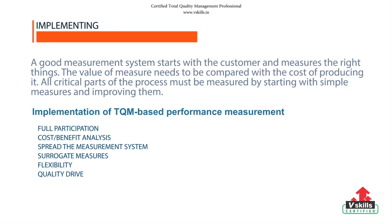Fourth step is to use surrogate measures for subjective areas where quantification is difficult — for example, improvements in morale may be measured by reduction in absenteeism or staff turnover rates. Fifth step is designing the measurement system to be as flexible as possible, to allow for changes in strategic direction and continual review. Sixth step is to ensure that the measures reflect the quality drive by showing small incremental achievements that match the never-ending improvement approach.